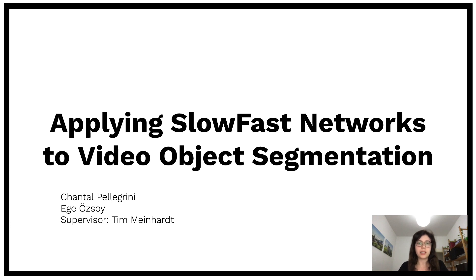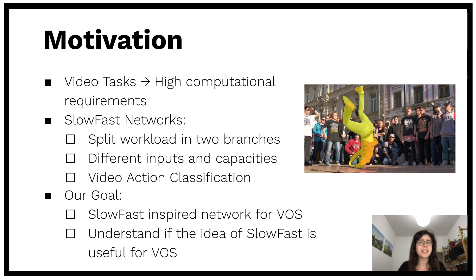Our project was to apply slow-fast networks to video object segmentation. Tasks on video generally have high computational requirements. Slow-fast networks deal with this by splitting the workload into two branches with different input sizes and capacities. The original slow-fast networks were used for video action classification. Our goal was to build an architecture that integrates the idea of slow-fast and can be used for video object segmentation.